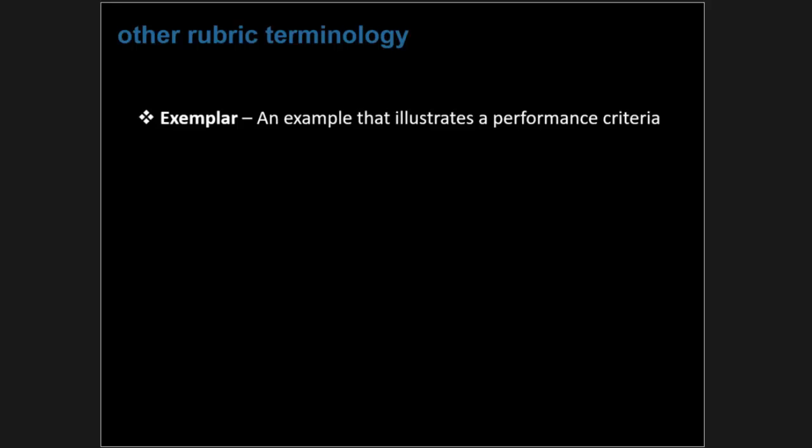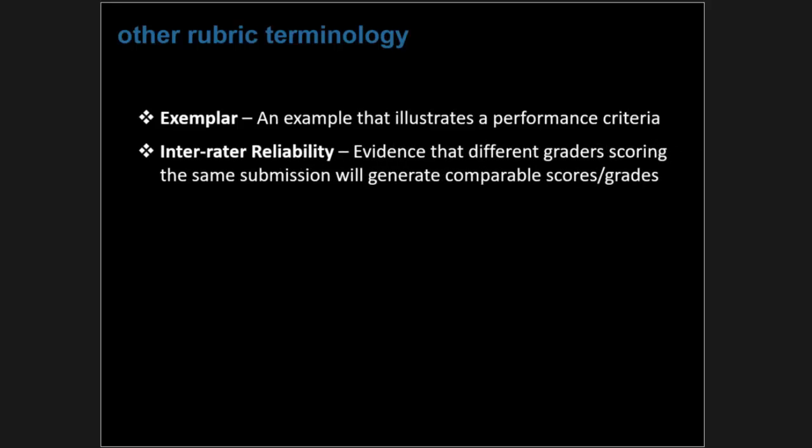Another term is inter-rater reliability — evidence that different graders scoring the same submission will generate comparable scores and grades. So what are some of the challenges of creating rubric-scored assignments? To begin with, creating assignments that lend themselves to rubric scoring need to have enough criteria — the assignment must generate the evidence needed to evaluate a student based on all the criteria you're trying to measure them on.